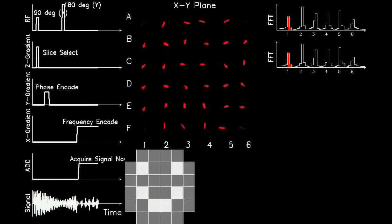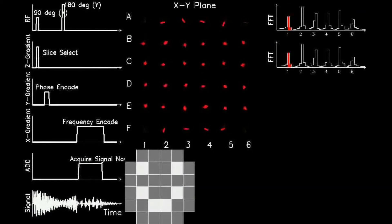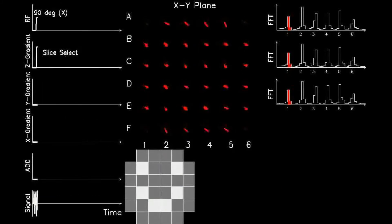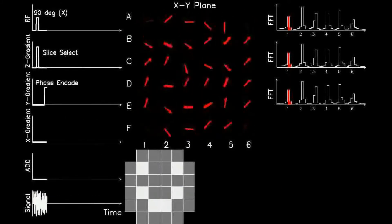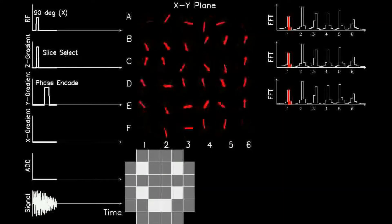As before, each time course, the acquired signal is Fourier transformed and graphed in the right-hand panel. Note how there are now 6 peaks, each representing the total signal received from an entire column.